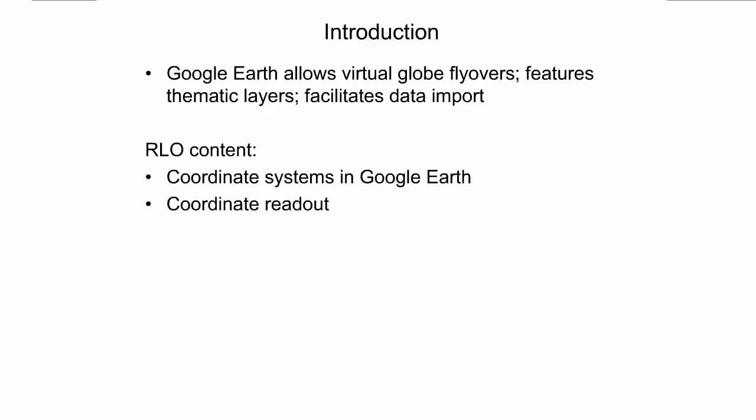Google Earth reports the coordinates of a location indicated by the mouse cursor position and for the location of predefined places, such as placemarks. The software allows the coordinates to be displayed in different coordinate systems. This presentation explains these different coordinate systems for position readout.